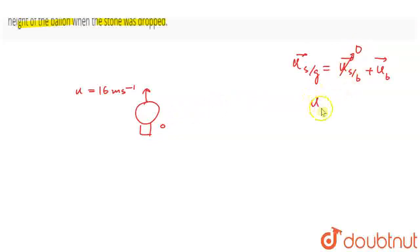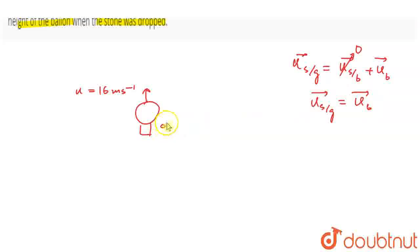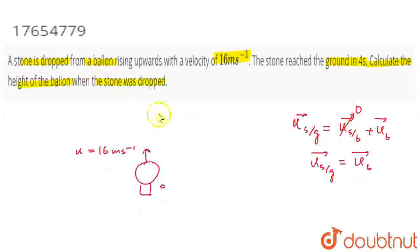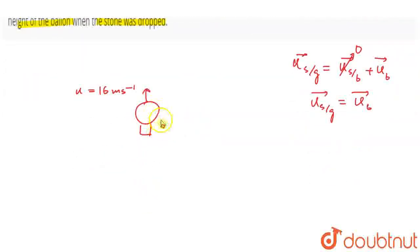The initial velocity of the stone with respect to the ground will be equal to the initial velocity of the balloon. When the stone is dropped from a rising balloon, the stone acquires the velocity of the balloon.